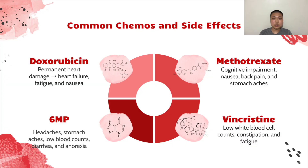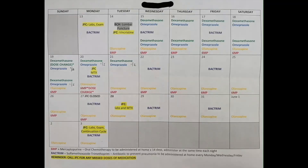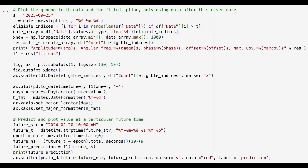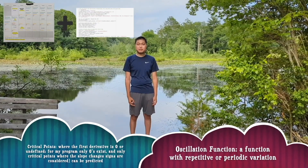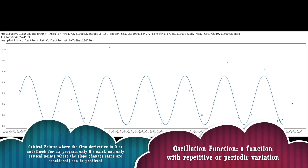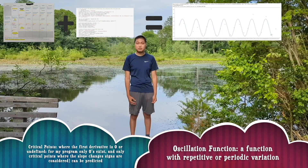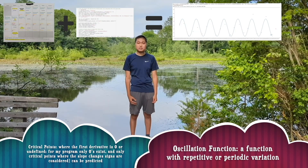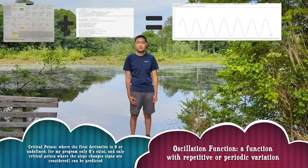Unfortunately, chemo also has many physical and mental side effects. Luckily for blood cell cancer patients, by incorporating a patient's chemo schedule and using my program, all critical points can be predicted, and an oscillation function can be made for each chemo's effect on blood cell counts over time.